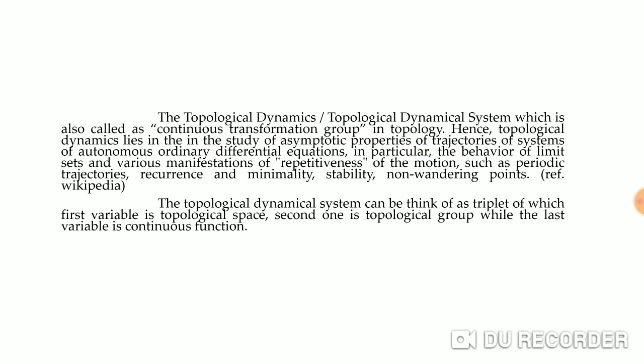Topological dynamics, also called a topological dynamical system, is also known as a continuous transformation group. It is a combination of algebra, topology, and dynamical systems, or one can say ordinary differential equations. Hence topological dynamics lies in the study of asymptotic properties of trajectories of systems of autonomous ODEs — in particular, the behavior of limit sets and various manifestations of repetitiveness of motions, such as periodic trajectories, recurrences, minimality, stability, and non-wandering points. You can take reference from the Wikipedia article on topological dynamics for more detail.